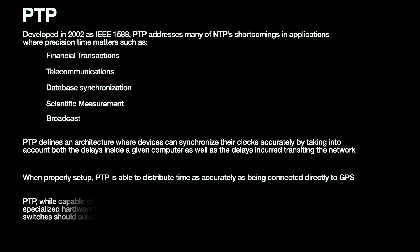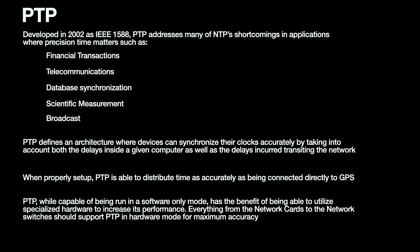NTP is good for within a millisecond, which sounds really awesome. But when we start looking at video signals and the tight timings needed to keep them in sync, we actually need to go lower — we probably need microsecond or even nanosecond precision. So in 2002, the IEEE came up with 1588, the Precision Time Protocol. It addresses NTP shortcomings in applications where time really matters: financial transactions, telecommunications — the way cell towers sync with each other to keep you on a call — database synchronization, scientific measurement, oil and gas, and broadcast.